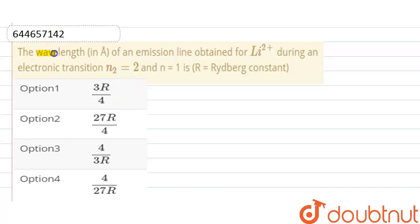Hello everyone. Here the question is: the wavelength in angstrom of an emission line obtained for lithium plus two during an electronic transition from n2 equals 2 to n equals 1.